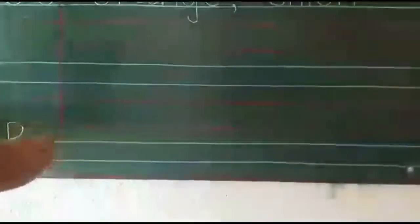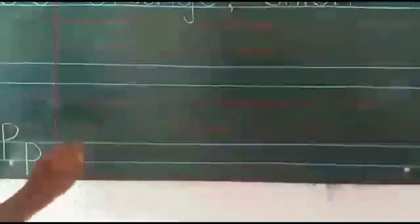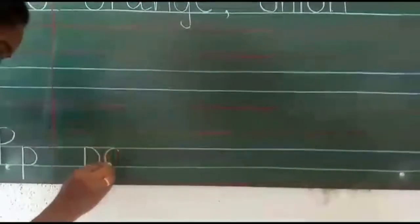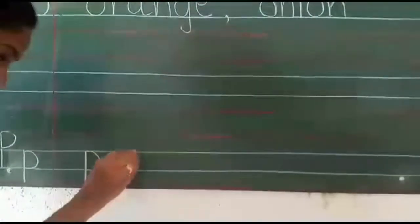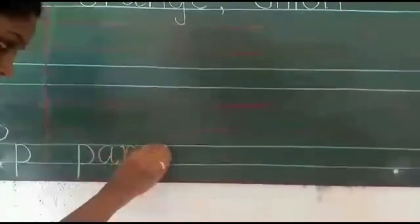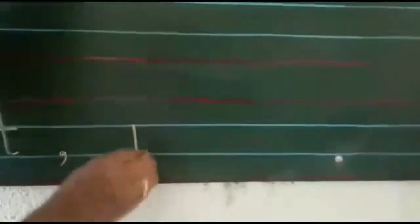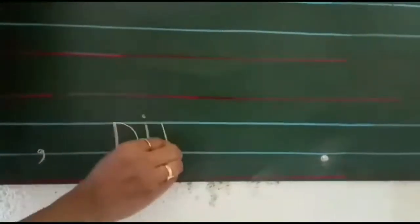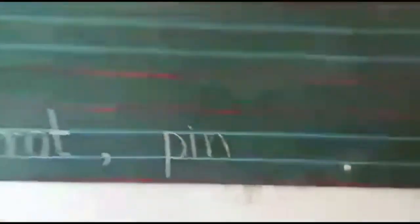So we will write the spelling of parrot: P, A, R, R, O, T — parrot. Comma, one finger space. P, I, N — pin.